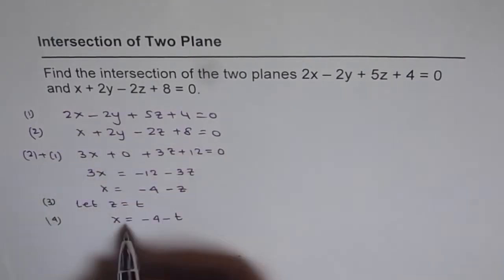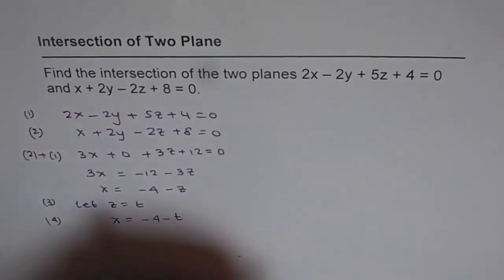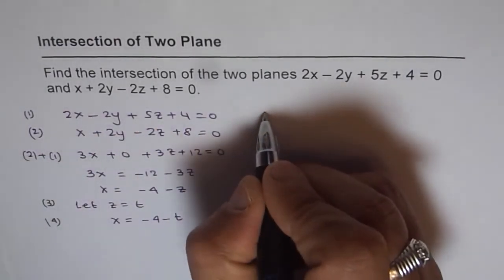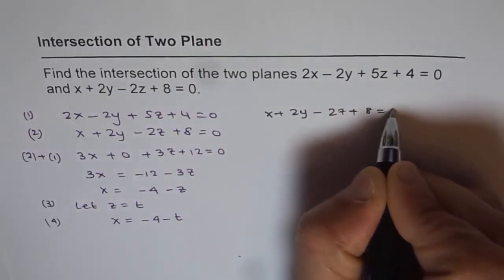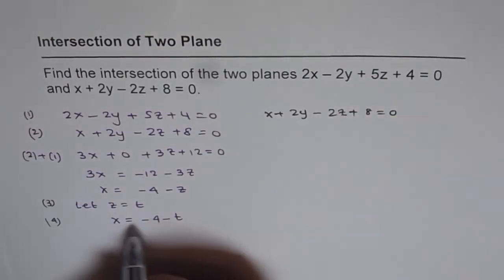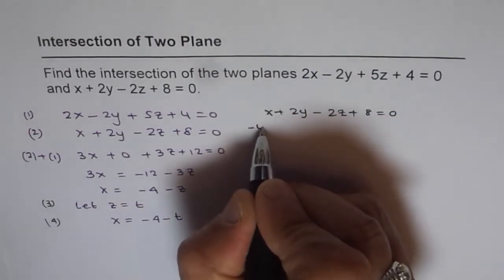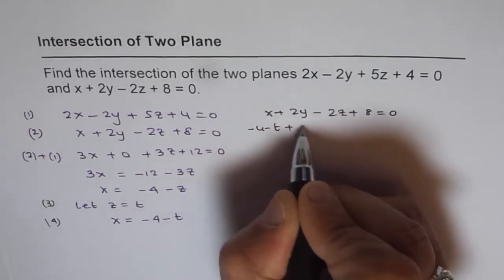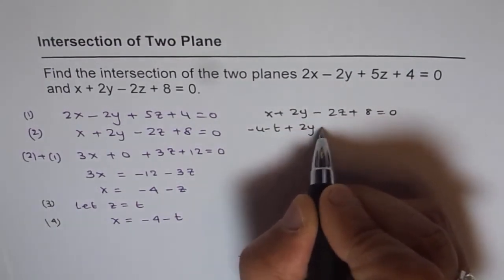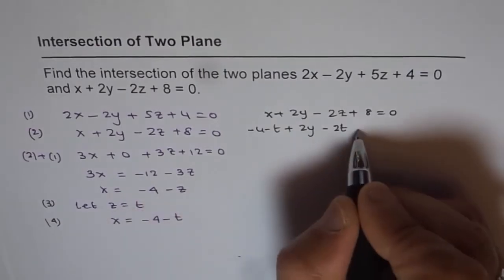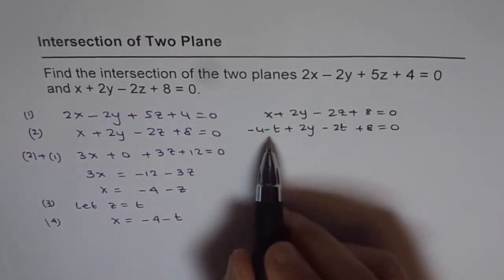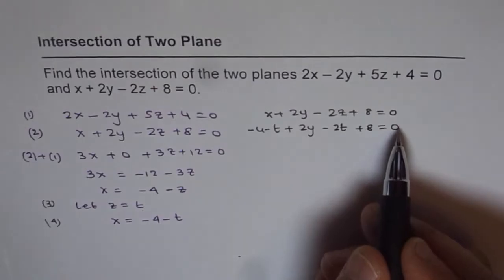Let's write equation 2: x + 2y - 2z + 8 = 0. Substituting x = -4 - t and z = t, we get (-4 - t) + 2y - 2t + 8 = 0. Now we can solve for y in terms of t.